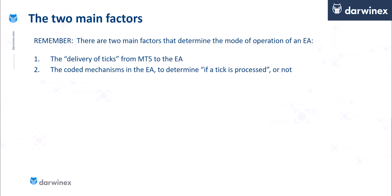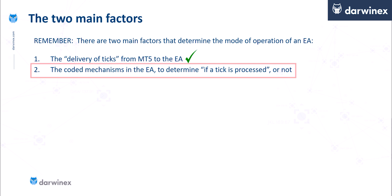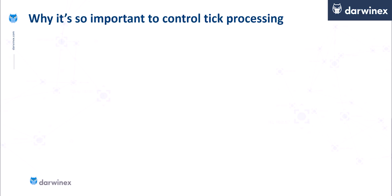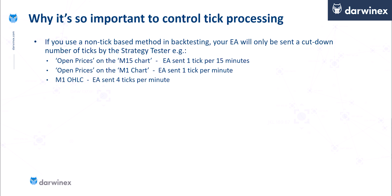From Part 1, there are two main factors that determine the mode of operation of an expert advisor: the way ticks are delivered to the expert, which we've now covered across four backtest models and live trading, and the coding mechanisms built into an EA to determine if a delivered tick is actually processed. If you use a non-tick-based method in backtesting, your EA will only be sent a cut-down number of ticks — for example, one tick per 15 minutes with Open Prices on M15, or one tick per minute with Open Prices on M1.